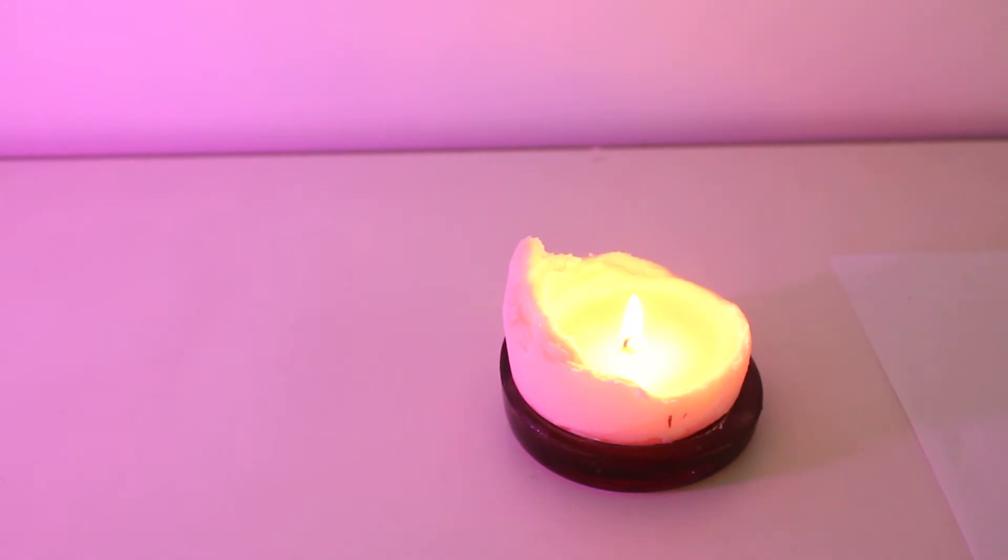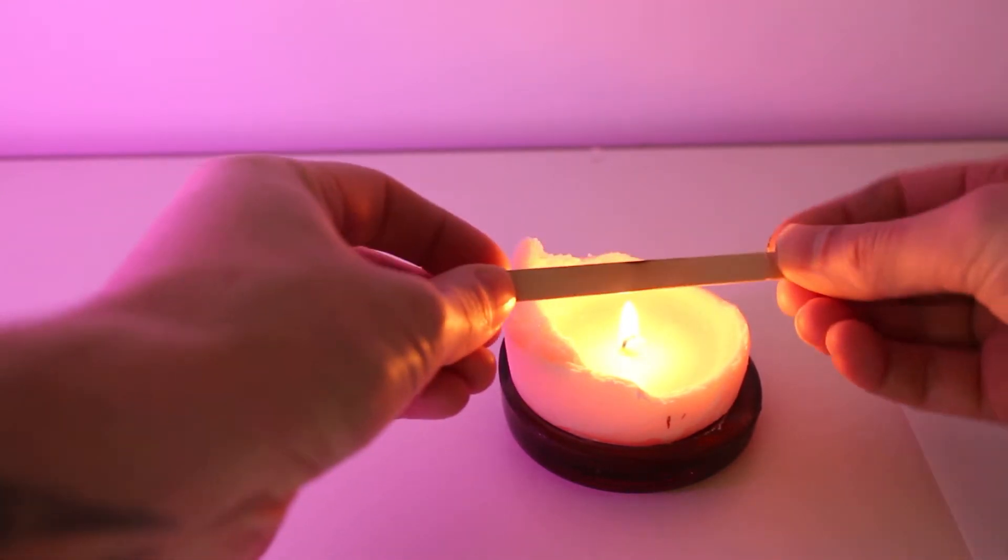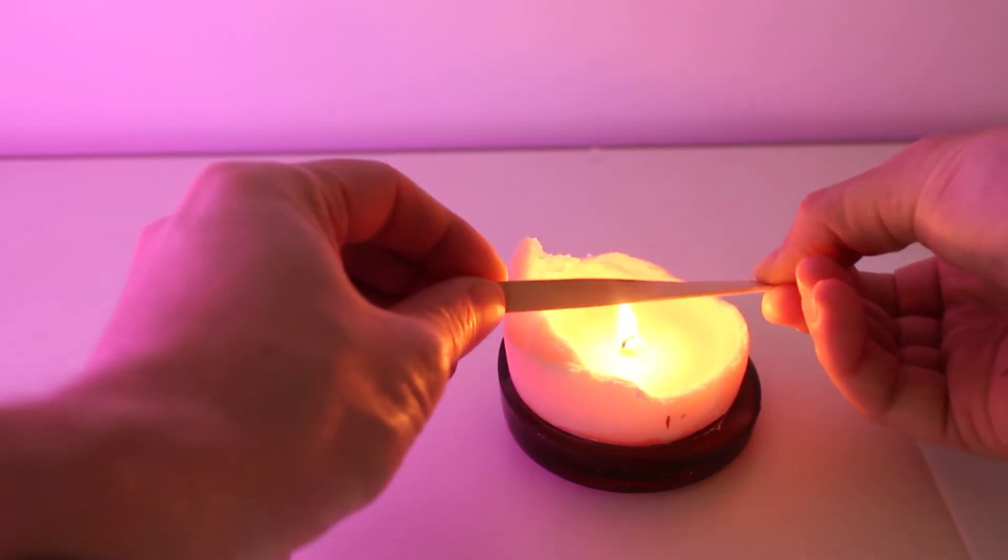Now we need to bend our icy pole stick into a propeller. Use a lit candle and then twist the icy pole stick over the heat. Make sure that you get an adult to help you with this stage.